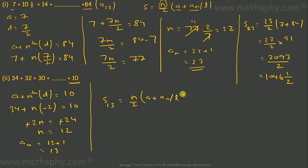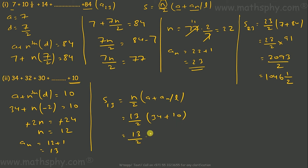With n = 13, a = 34, and last term = 10: S = 13/2 × (34 + 10) = 13/2 × 44 = 286. So the sum of the 13 terms in this progression is 286.